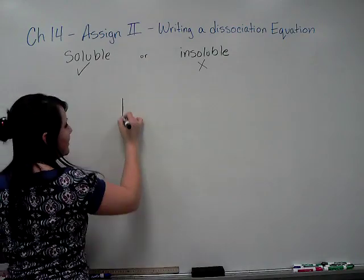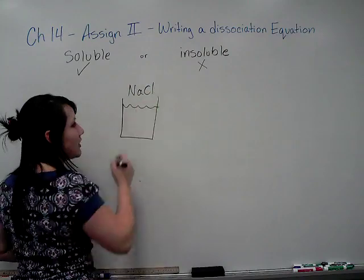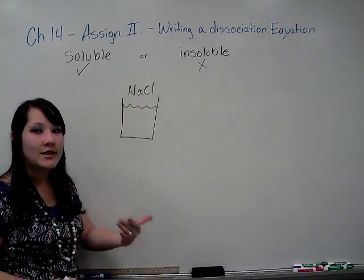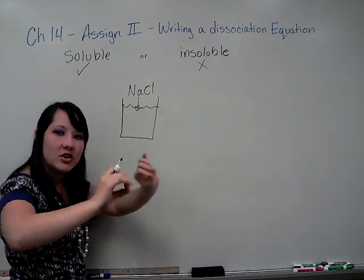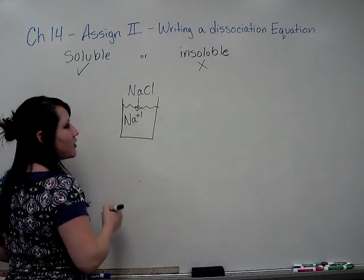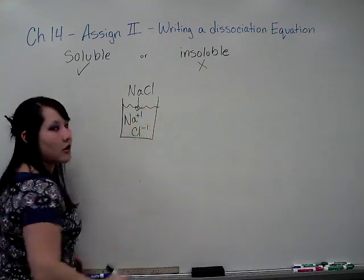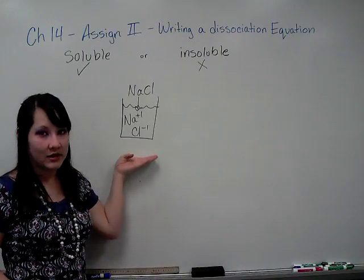When you place a substance in water, for example NaCl, sodium chloride is soluble. So when you actually place it in the water, it will dissociate or break apart into its individual ions: the sodium plus one ion and the chloride minus one ion. A dissociation equation simply represents this.